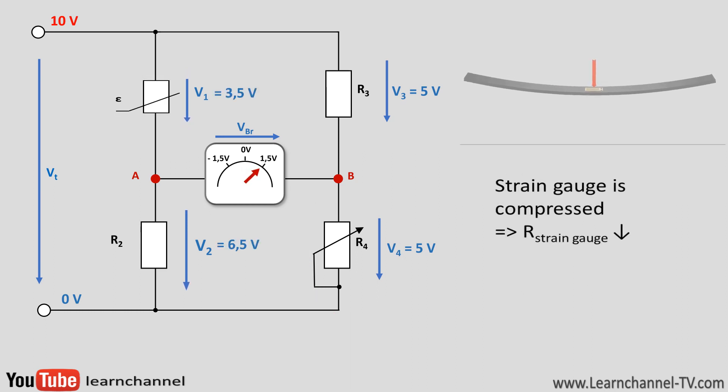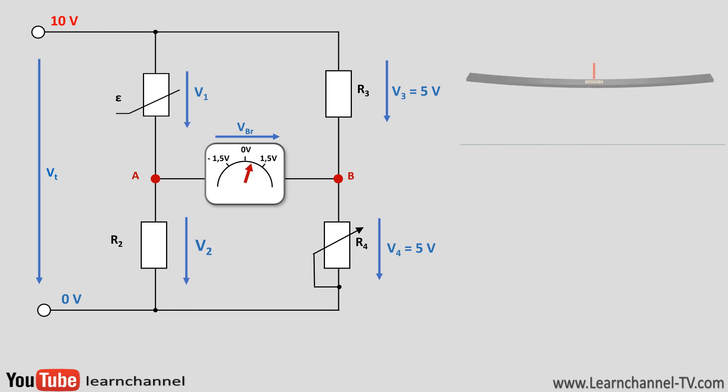Let's watch how this bridge works when the strain gauge is deformed. The resistance of the strain gauge changes, and the Wheatstone bridge is now in an unbalanced state. The bridge voltage is linear to the resistance change from the strain gauge.